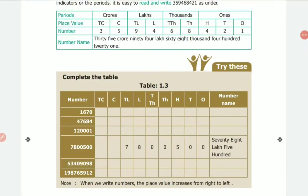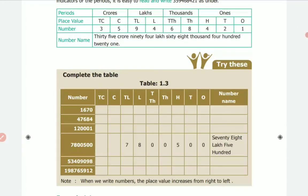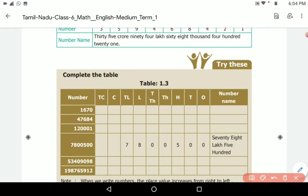Let us try this activity now. Complete the table. We have seen the example in the above chart, right? Similarly we have to solve this. So how to write this number? We have to write from right to left. So write 0 here, write 7 here, write 6 here, write 1 here.